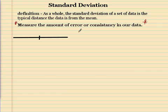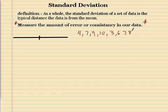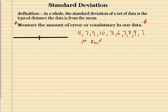So let's start off with the data set: 4, 7, 9, 10, 3, 6, 7, 8, 9, and 1. So here's my data set. The first thing when we find the standard deviation, we have to find the average — we have to find the x-bar.